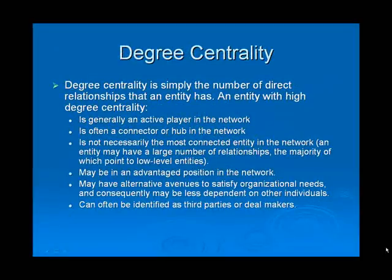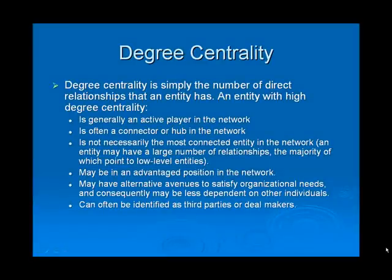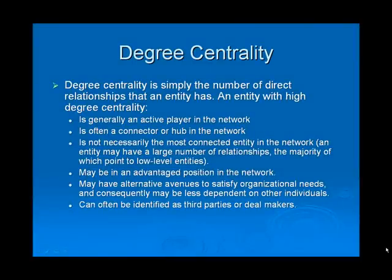The first social network analysis metric that we'll look at is degree centrality. Degree centrality is simply the number of direct relationships that an entity has. An entity with high degree centrality is generally an active player within the network and can be considered a connector or hub. However, degree centrality does not necessarily identify the most connected or the most important entity in a network. For example, an entity may have a large number of relationships, the majority of which point to low-level entities.